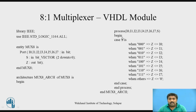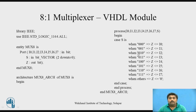When S is 000 — meaning all 3 bits of S are 0 — the output Z equals I0, so I0 is connected to the output. Similarly, when the select line is 001, Z equals I1. You can write the remaining possible combinations in the same way. There are 8 combinations in total, up to 111 where Z equals I7.